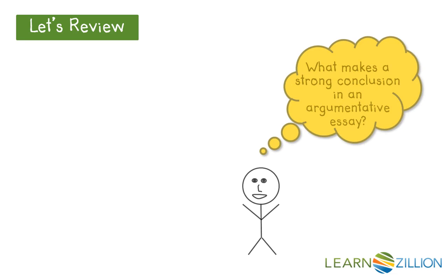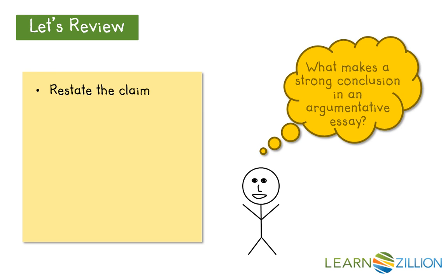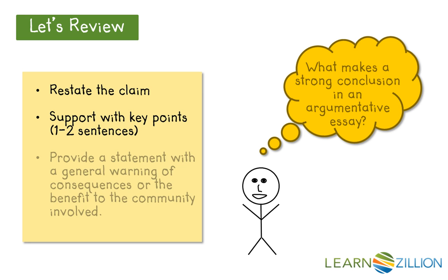Let's review. What makes a strong conclusion in an argumentative essay? First, you need to restate the claim — you need to emphasize it, but use different words than what you used in the introduction. Also, you need to support with key points; this will take one to two sentences in your conclusion. And you need to provide a statement with a general warning of consequences or the benefit to the community involved.